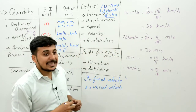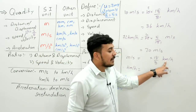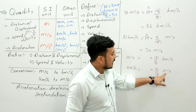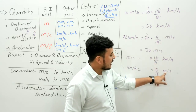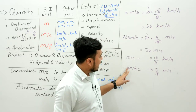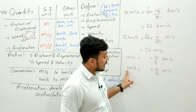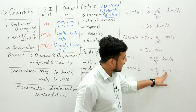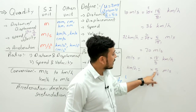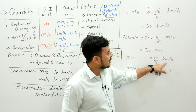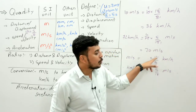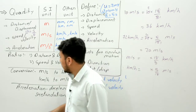How to remember the conversion: if you are converting to a bigger unit like km/h, the numerator should be bigger (18 on top). If converting to a smaller unit like m/s, the numerator should be smaller (5 on top). Kilometer is the bigger one, so 18 is bigger — put it on top when converting to m/s.